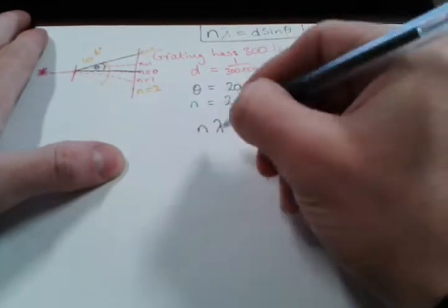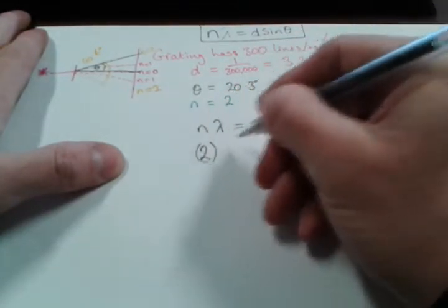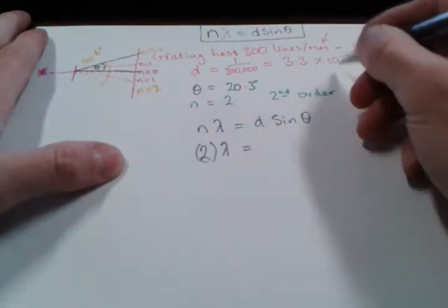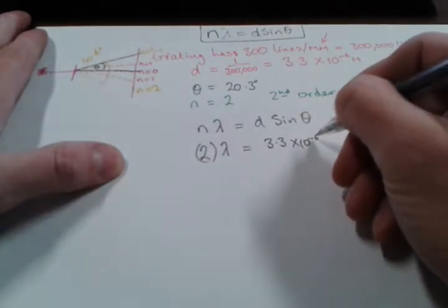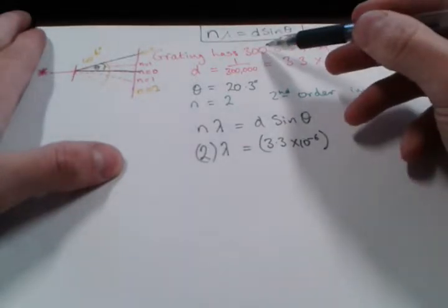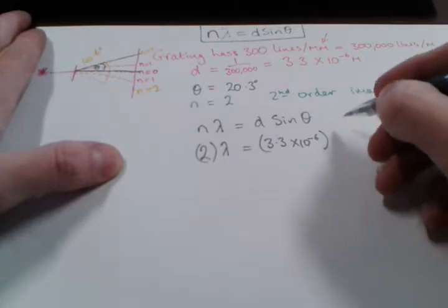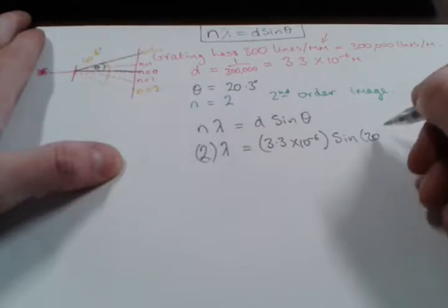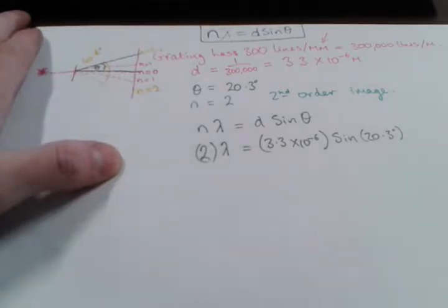n, we said was 2 - we've got a second order image. So that's 2 times lambda, which is what we're trying to find, is equal to d, which is this value that we calculated earlier, 3.3 by 10 to the minus 6. The biggest mistake people make when they're answering these questions is that they plug in 300 for d, which is incorrect. And then sine theta, sine of 20.3 degrees.